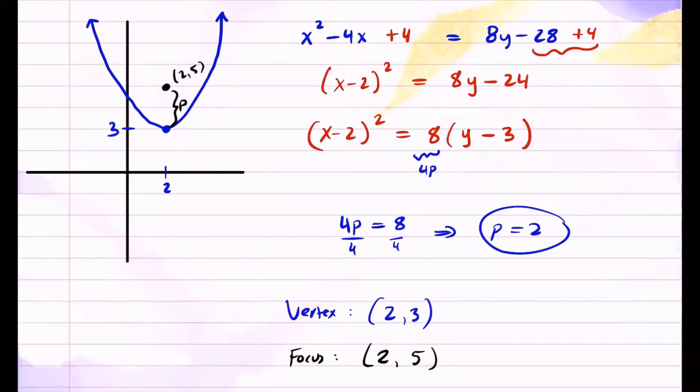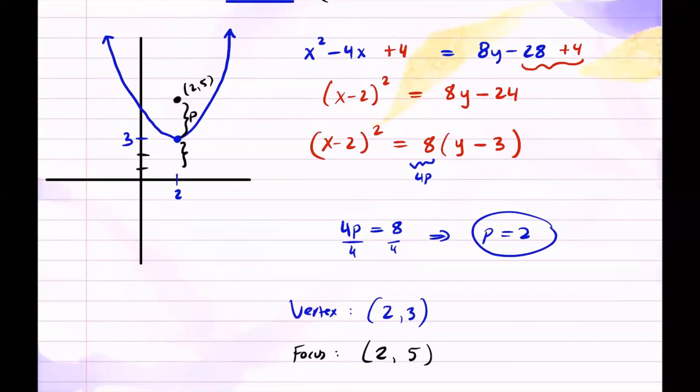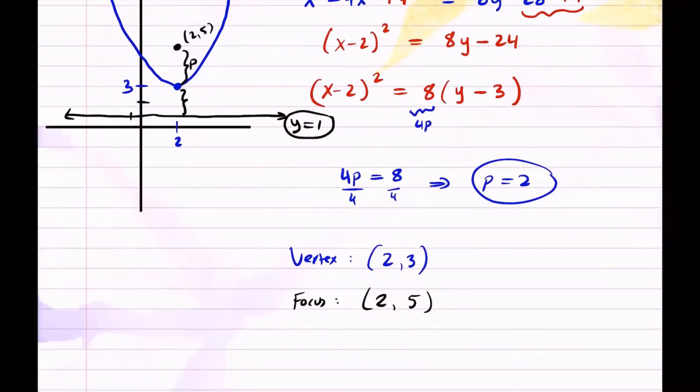Now the directrix, it's going to be 2 units this way, and that will be the line you're going to create. So you can see that if this was 3, so going 2 units down, 3, 2, 1. So it's going to be at 1. So y equals 1 will be the equation for the directrix. So we can write that down on the side. The directrix of the vertex of this parabola is going to be the line y equals 1.